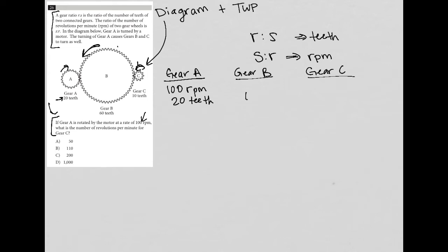Gear B, we know that it has 60 teeth, but we do not know the RPM. Gear C also, we do not know the RPM, but we do know that it has 10 teeth. This is part of my translate word problem strategy. I'm just writing down the information so that I can just look at what I've written and not have to go back up to the question. So the rest of the question says, what is the number of revolutions per minute for gear C?